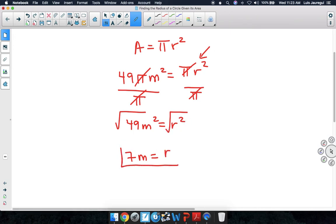So we get that the radius of this particular circle is going to be 7 meters. So that's how we can find the radius of a circle given its area. Thank you for watching and have a wonderful day.